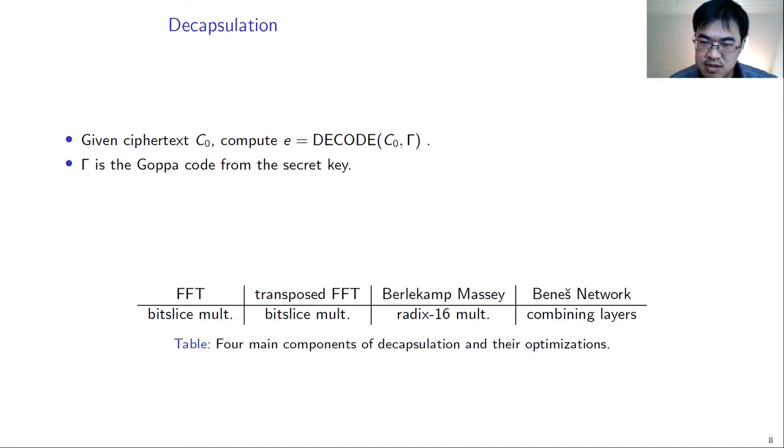First, we optimize the bit-slice multiplication in the FFT component. And we use a new red-existing method to implement the finite field multiplication in the Berlekamp-Massey algorithm. And last, we optimize the Benes network by combining the computation of many layers together.